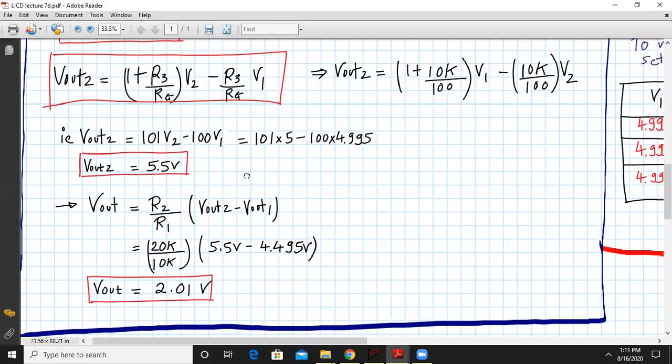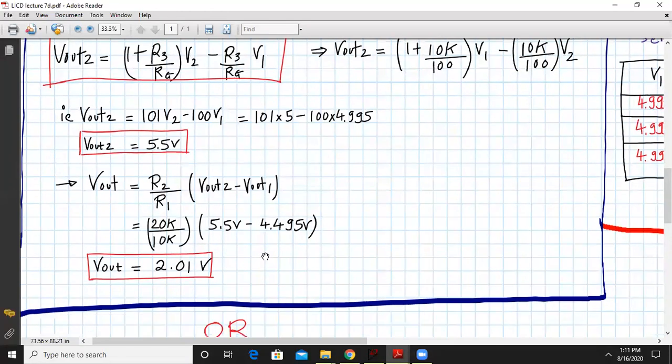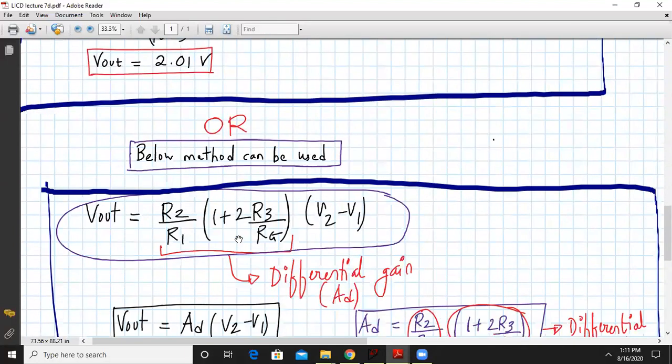And now the overall expression Vout was given by (R2/R1) × (Vout2 - Vout1). So you can substitute the values of R2 and R1 as 20k and 10k and finally the output expression is 2.01V. Now there is another method of doing this.